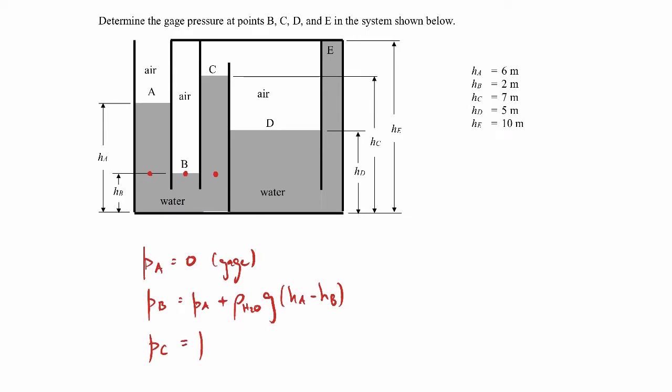And we're going to subtract out the weight of the water moving up this distance, which corresponds to, let's see, it'd be HC minus HB. So it'd be HC minus HB.